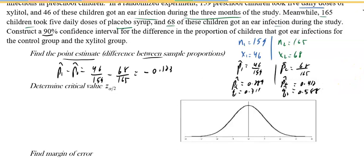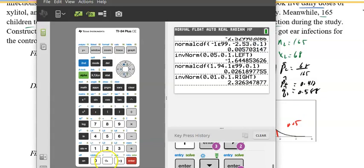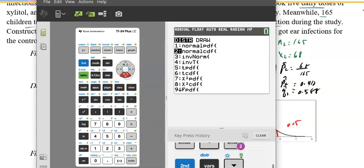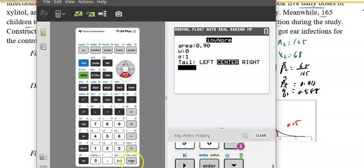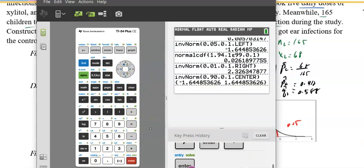Now we want to construct an interval. z sub alpha over 2—they said 90 percent confidence interval, so five percent below, five percent above, this is 90 percent. If I use my calculator and figure out what z sub alpha over 2 is, I will use inverse normal distribution. We want 0.90 in the center, and we get 1.64.